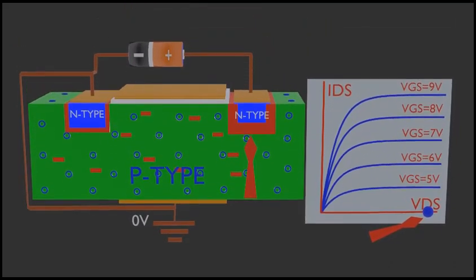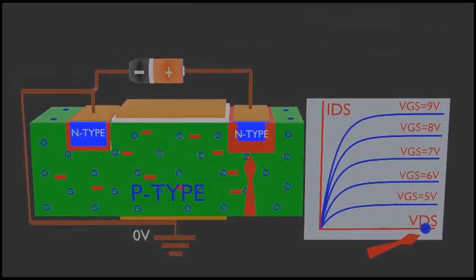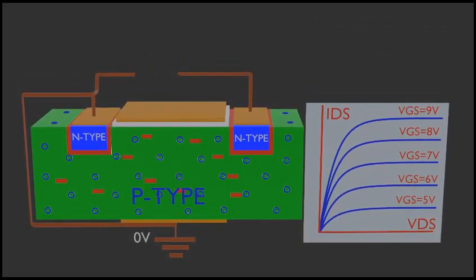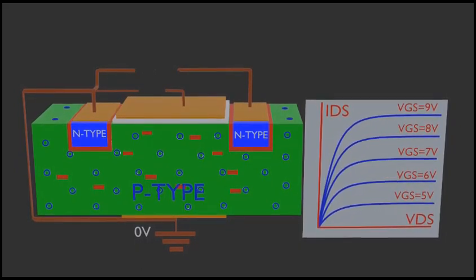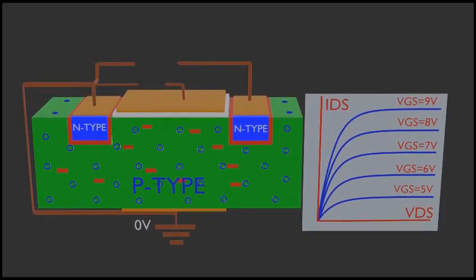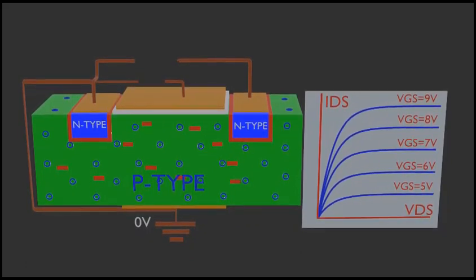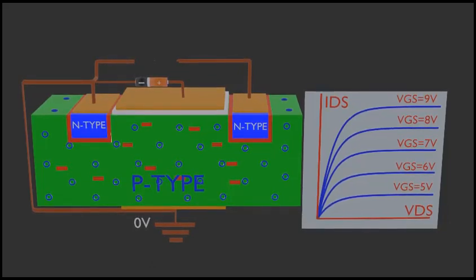To allow current flow between drain and source, we need to create a channel between them. To create the channel, we connect a voltage source at the gate — the negative terminal to source and the positive terminal to the gate. There is no current flow from gate to substrate because there is no physical connection.